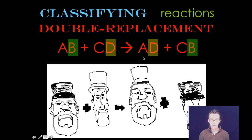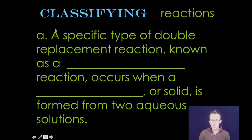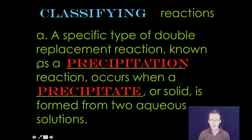As you look at the general equation here, we've got two compounds and essentially they switch hats. So A starts with B and ends up with D. C starts with D but ends up with B. Now we've got a couple specific types of double replacement reactions. The first of which is known as a precipitation reaction.